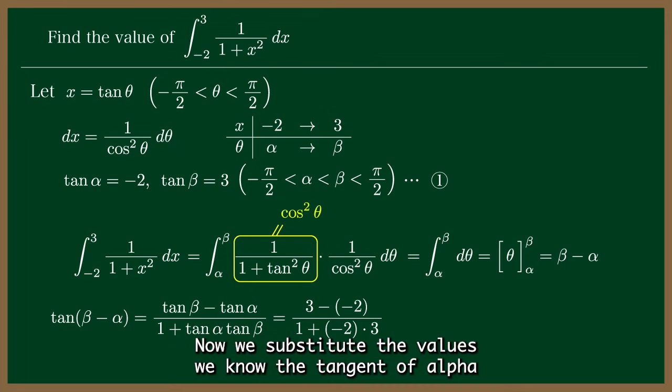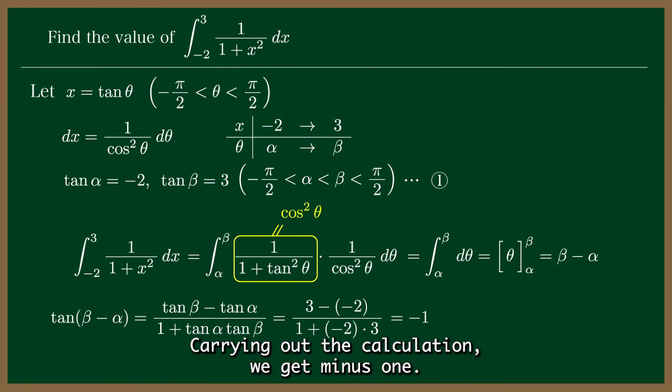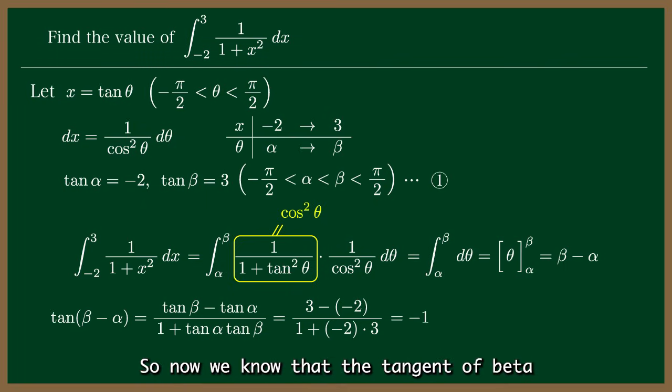Now we substitute the values we know. The tangent of alpha is minus 2 and the tangent of beta is 3. Carrying out the calculation, we get minus 1. So now we know that the tangent of beta minus alpha equals minus 1.